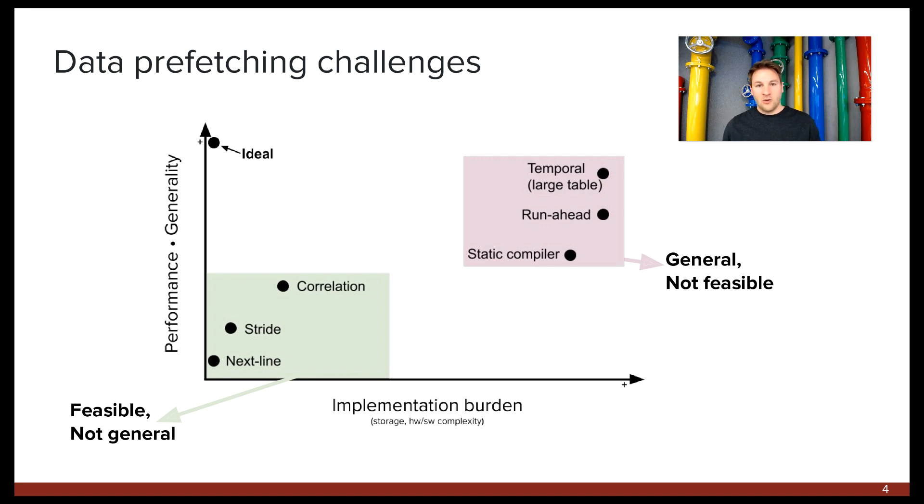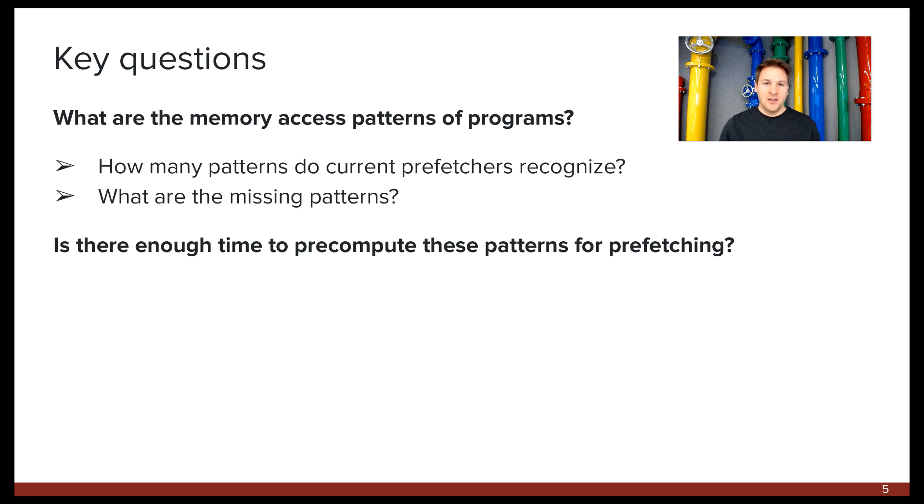So the key to better and cheaper prefetching is to first understand what these underlying access patterns are. Specifically, the key questions that we want to answer in this work are the following. First, what are the memory access patterns of these programs? Building upon this, how many of these patterns do current prefetchers actually recognize? And what are the patterns that they don't recognize? Second, is there enough time to pre-compute these patterns for prefetching? In other words, can we prefetch fast enough that it will actually work?